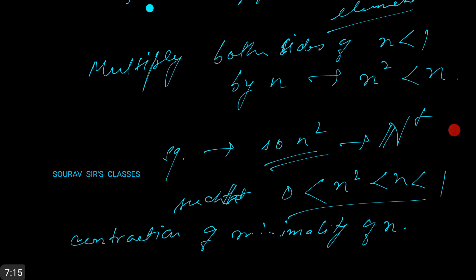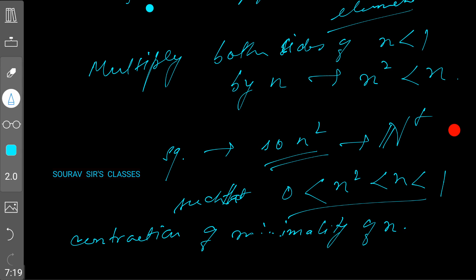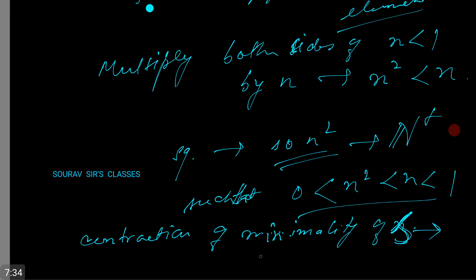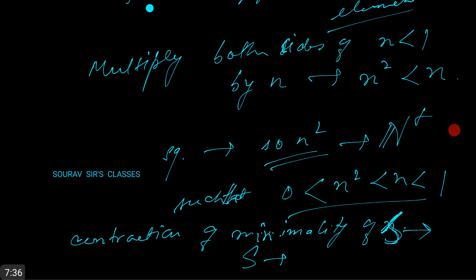This is a contradiction of the minimality of S. So we assumed the contrapositive, therefore S is empty. That's it — that's your proof. Thanks for watching.